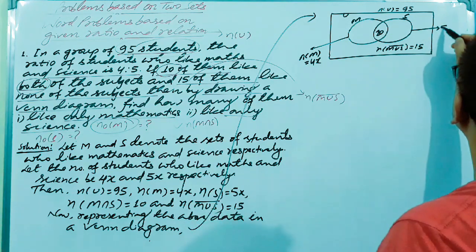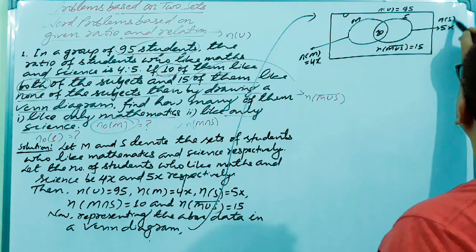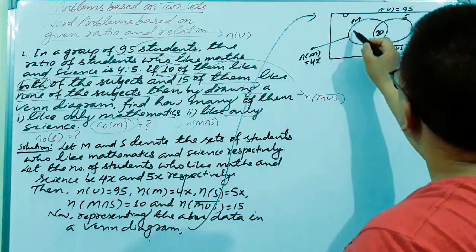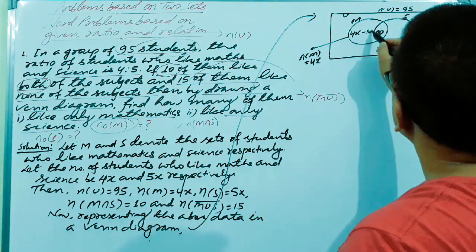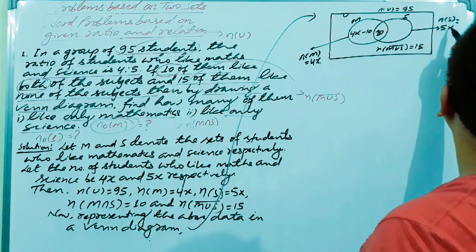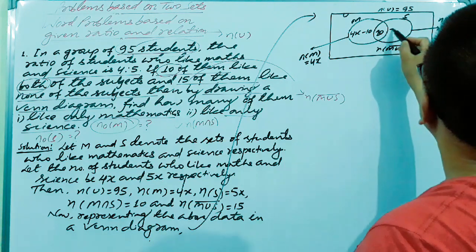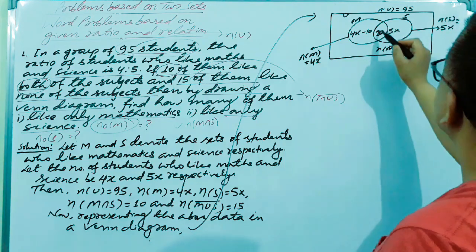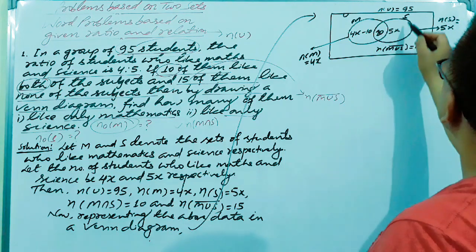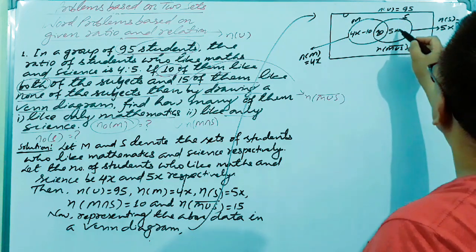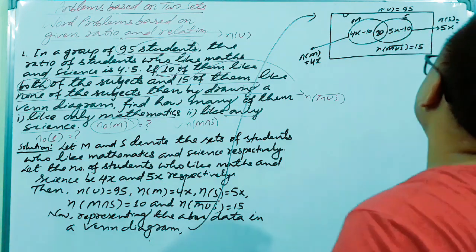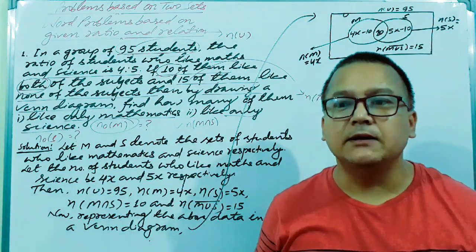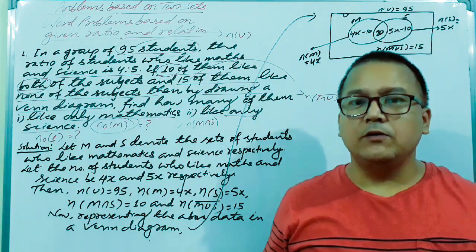In the intersection region we write 10. Since n(M) = 4x total and 10 is already in the intersection, the only-maths region is 4x minus 10. Similarly, since n(S) = 5x total and 10 is already in the intersection, the only-science region is 5x minus 10.